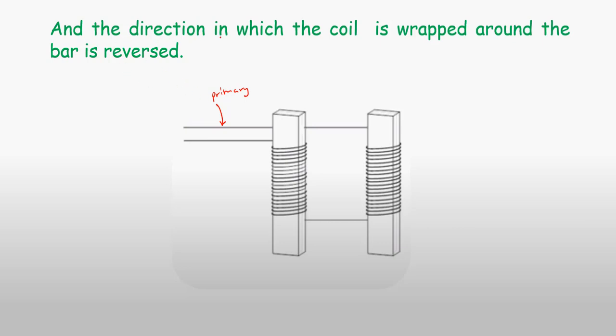The direction in which the coil is wrapped around the bar is reversed. Assuming we have the first wire heading to this bar and we wound it in a clockwise direction, when you reach the second bar we shall have to wound it in the anti-clockwise direction. The direction of the coil is reversed.